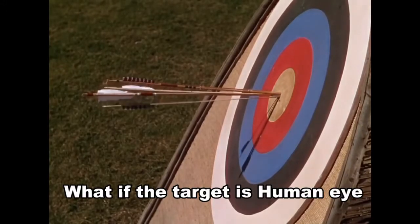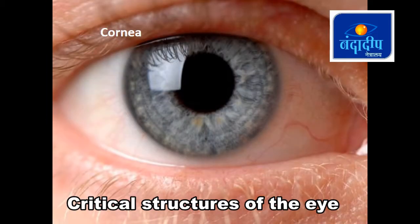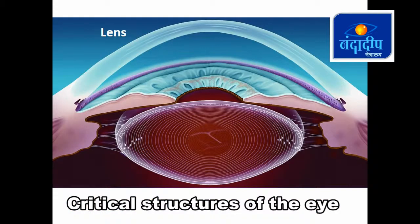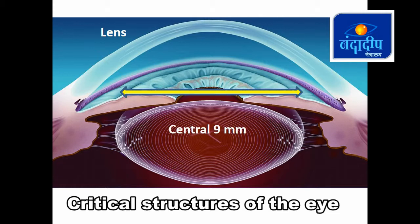What if the target is the human eye? What are the critical elements in the human eye which, when affected, can lead to irreversible loss of vision? In the cornea, the central three millimeters is a very crucial zone, as any trauma in this area will lead to irreversible loss. If the lens is hit in the central 9 millimeter zone, it leads to cataract which requires further surgery.